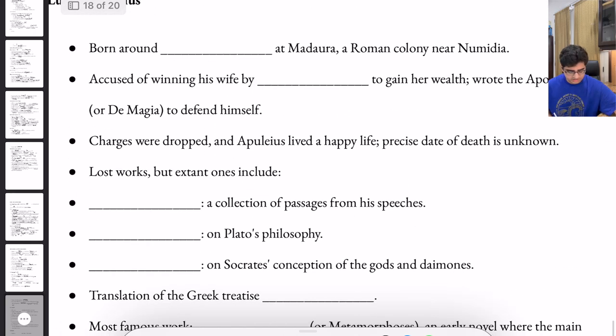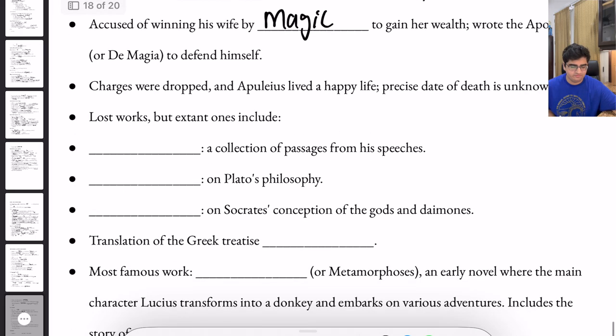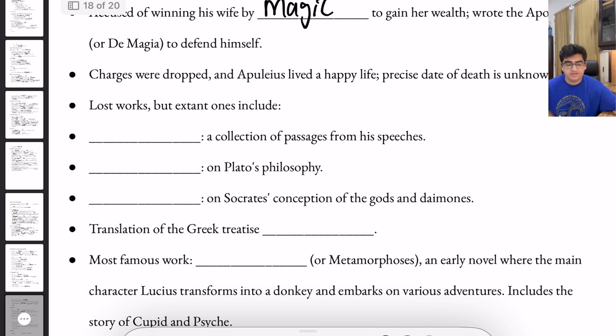Next, we have Lucius Apuleius. Born around 125 A.D. at Madaura, a colony near Numidia, Apuleius was accused of winning his wife by magic to gain her wealth, so he wrote the Apologia, or De Magia, to defend himself. The charges were dropped, and Apuleius lived a happy life, with the precise date of death unknown.